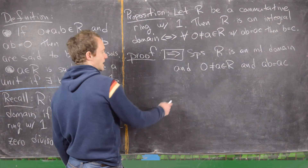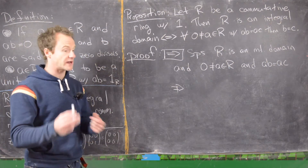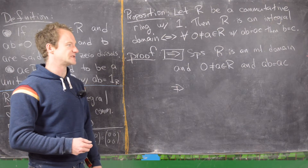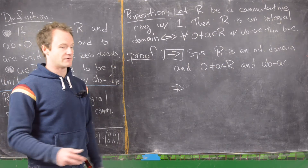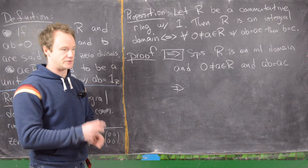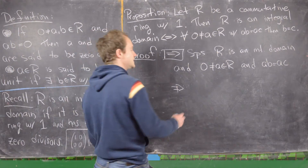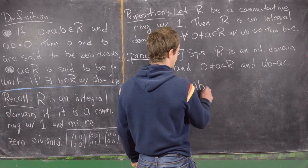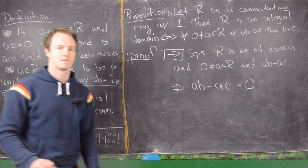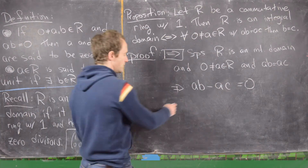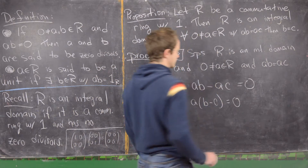Notice that AB equals AC. You might think we can just multiply both sides by A-inverse, but we're outside the world of groups or fields — we don't know things are invertible. Instead, we subtract AC from both sides to get AB minus AC equals zero, which gives us A times (B minus C) equals zero.